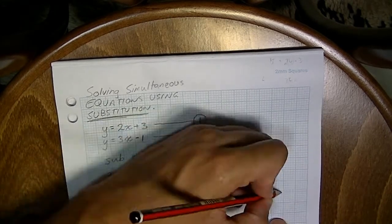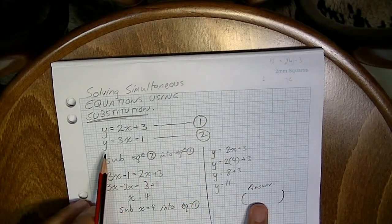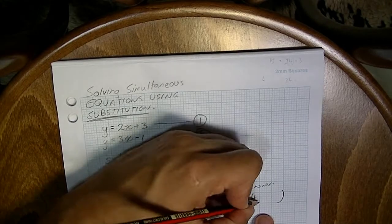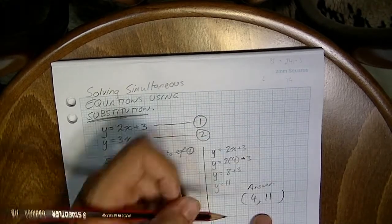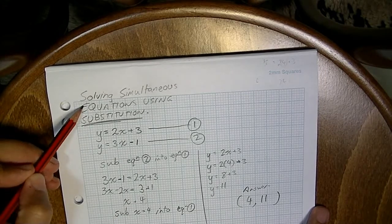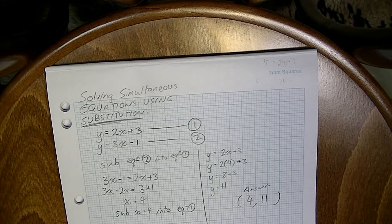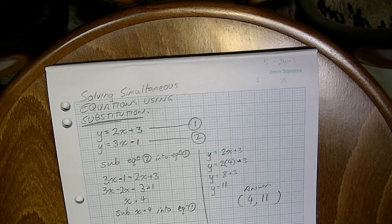So the answer, the simultaneous solution to these two equations is x equals 4, y equals 11. What we've done here is solve simultaneous equations using substitution. In the next video, we'll do substitution again, but in a slightly more difficult scenario.